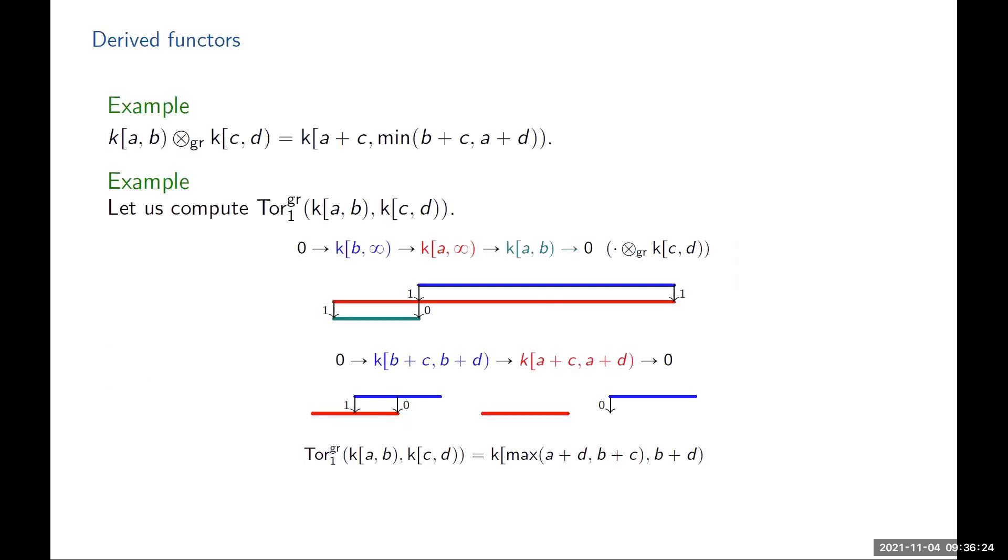We also need to compute the derived functors for these operations to get the Künneth theorem. Those are pretty straightforward computations as well. Suppose you have this interval module a, b, and you can construct its free resolution. Then you tensor the sequence with the interval CD. You only care about the red and blue interval tensor products, and you're trying to compute the kernel of this map. What is the kernel of this map from the blue interval to the red one? There are two cases to consider. Either the blue and the red one will overlap like this, or they will not overlap like this. In this case, the kernel is the whole thing. In the other case, the kernel is from here to here. So you can compute the Tor functor like that.